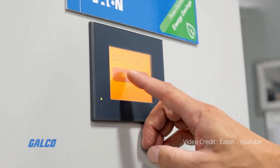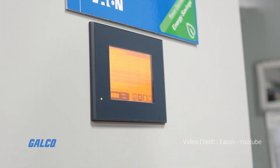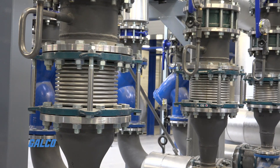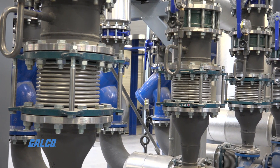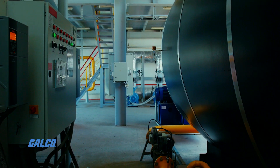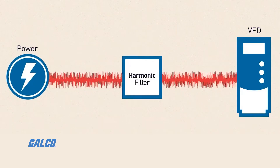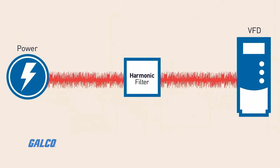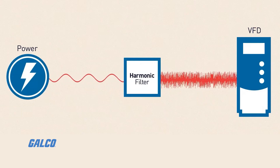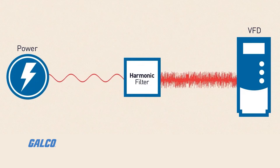Many industries across the world use variable frequency drives, known as VFDs, to control the electrical power needed to run motors, pumps, and other mechanical systems. While VFDs can help efficiency, the total harmonic distortion that is produced exceeds the limits set out in the IEEE 519 standard.